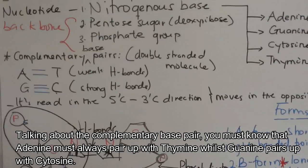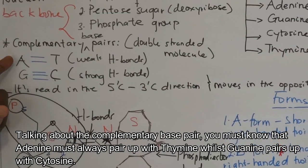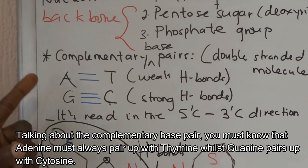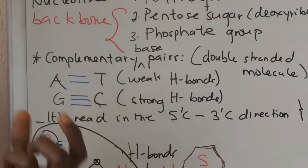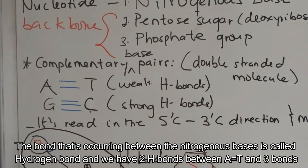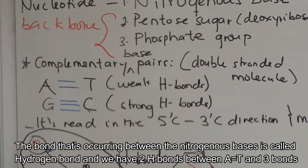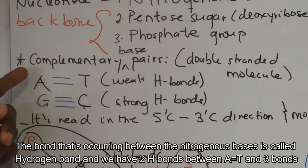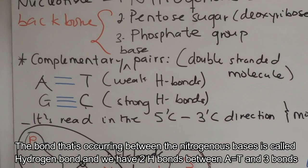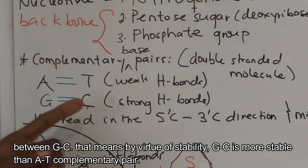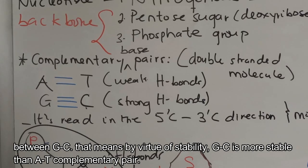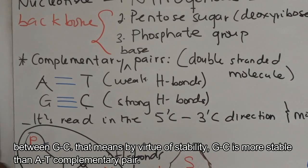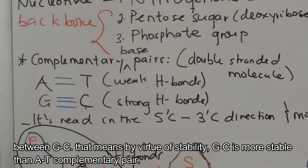Talking about complementary base pairs: adenine must always pair up with thymine, whilst guanine pairs up with cytosine. The bond occurring between the nitrogenous bases is called a hydrogen bond. There are two hydrogen bonds between adenine and thymine, and three hydrogen bonds between guanine and cytosine. This means by virtue of stability, the guanine-cytosine pair is more stable than the adenine-thymine pair.